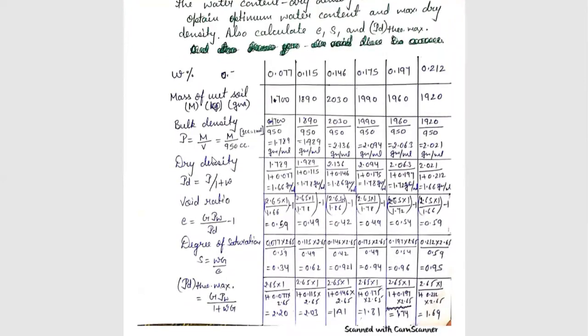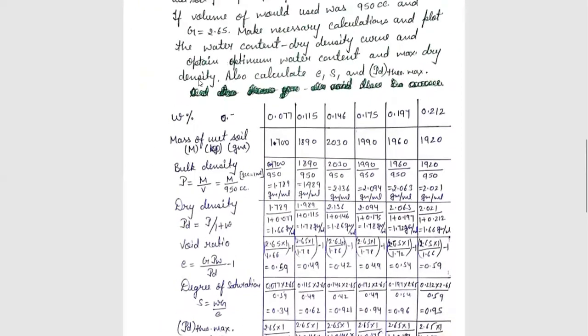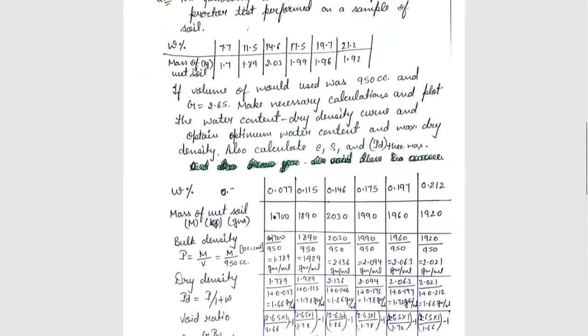First, we will change the percentage into normal values. 7.7 will be 0.077, 11.5 will be 0.115, 14.6 will be 0.146, 17.5 will be 0.175, 19.7 will be 0.197 and 21.2 will be 0.212.